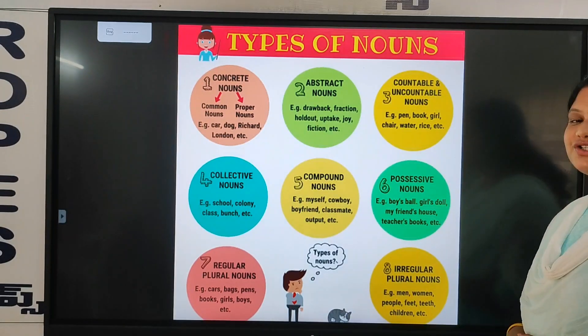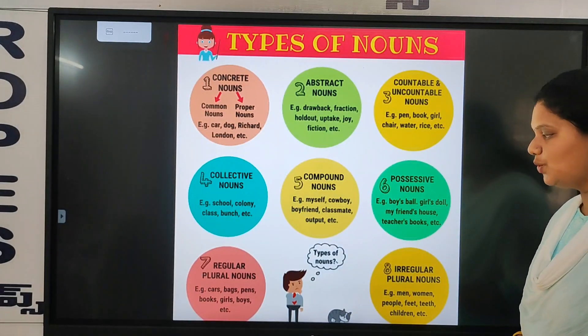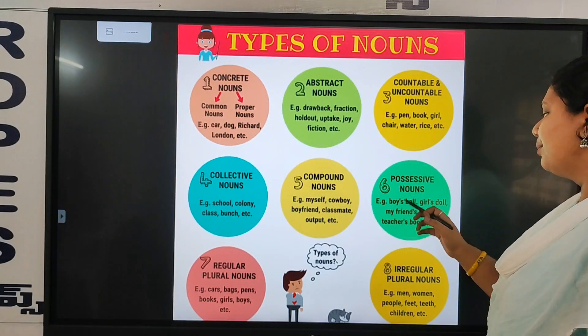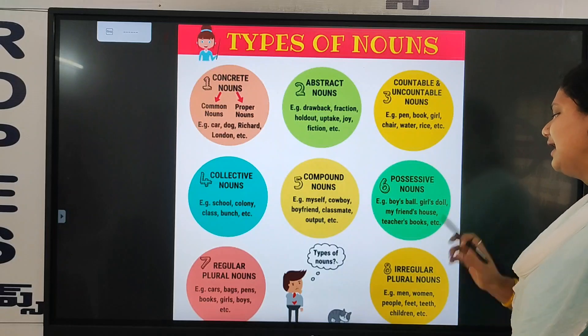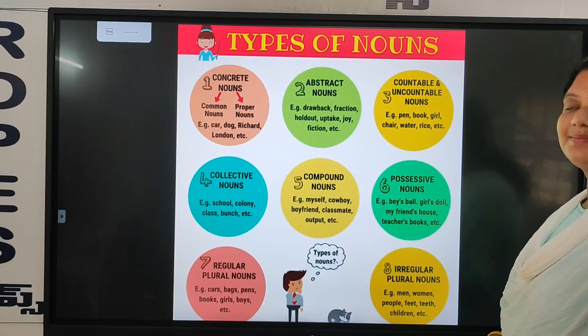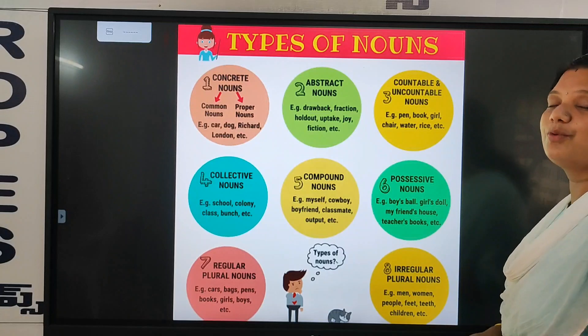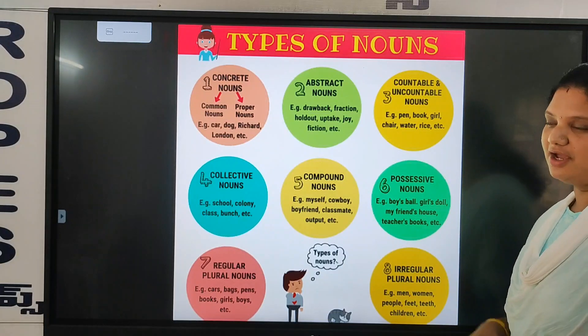Next one is possessive nouns. Possessive nouns — for example: boys' ball, girls' doll, my friend's house, teacher's book. These are all possessive nouns.